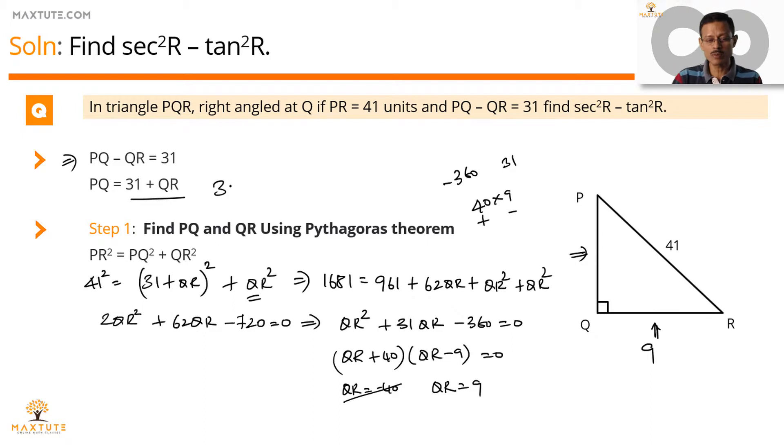We've found QR equals 9. PQ is equal to 31 plus QR, which is 31 plus 9, which is equal to 40. So measure of all three sides of this triangle are available to us.